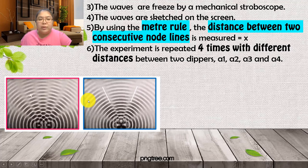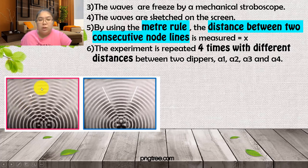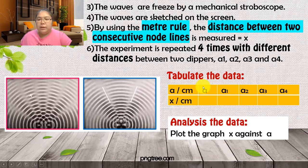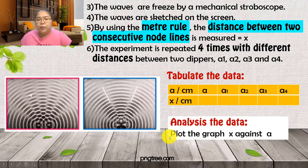From the ripple tank diagram example: when A (source separation) is smaller, X is larger; when A is further apart, X becomes smaller. For tabulating data, label columns A (manipulate variable) and X (responding variable) with units. For analyzing data, plot the graph of X against A — X on the Y-axis and A on the X-axis.